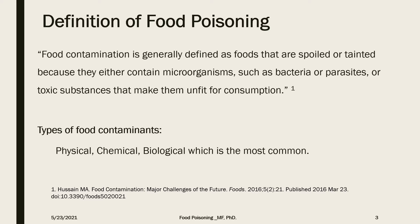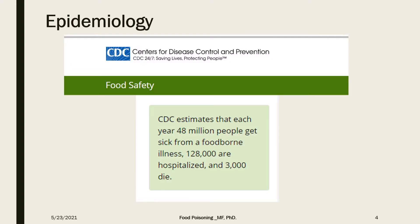Types of food contamination could be physical, chemical, or biological agents, with biological being the most common type. According to the CDC website, 48 million people get sick from foodborne illnesses, around 128 thousand are hospitalized, and 3,000 die each year.